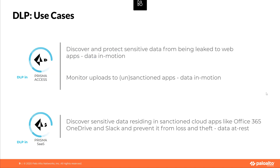The DLP use cases for Prisma Access are mainly two. Prisma Access covers data in motion — it can discover and protect sensitive data by blocking data leakage, but also can monitor uploads to sanctioned and unsanctioned cloud apps so organizations are aware of sensitive data going to those apps. In Prisma SaaS, the use case is different because Prisma SaaS DLP covers data at rest — data stored in SaaS applications like Office 365, OneDrive, or Box. Thanks, Carmine.